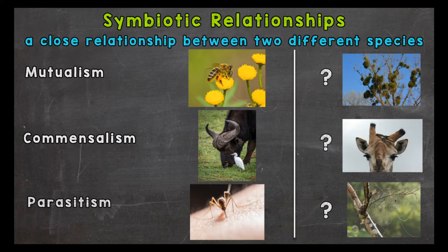We are going to discuss three types of symbiotic relationships: mutualism, commensalism, and parasitism. And we're going to start with mutualism.